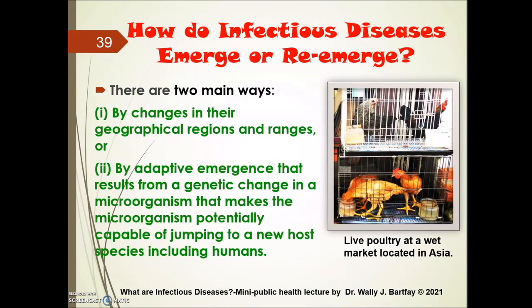How do infectious diseases emerge or re-emerge? There are two basic ways: first, by changes in their geographical ranges and regions; and second, by adaptive emergence resulting from a genetic change in the microorganism that makes it potentially capable of jumping to a new host species, which may include humans. A classical example is avian flu, which has jumped into the human species.